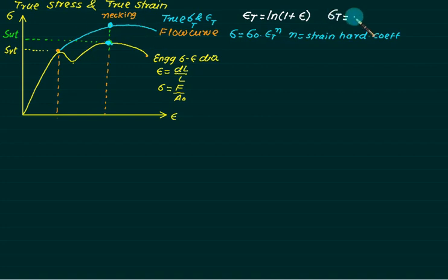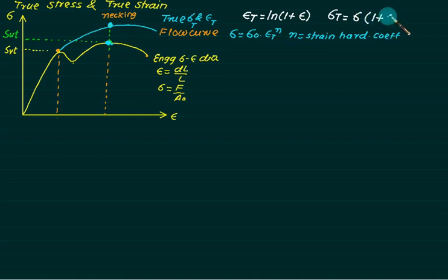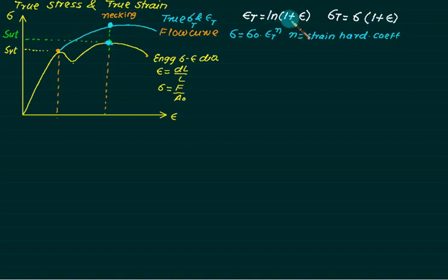Similarly, true stress equals the engineering stress multiplied by (1 + ε). So all stress values are to be multiplied by (1 + epsilon). Remember: for strain it is the natural log, and for stress it is simply multiplied by (1 + epsilon). You can easily remember: 1 + epsilon for stress, and ln(1 + epsilon) for strain.